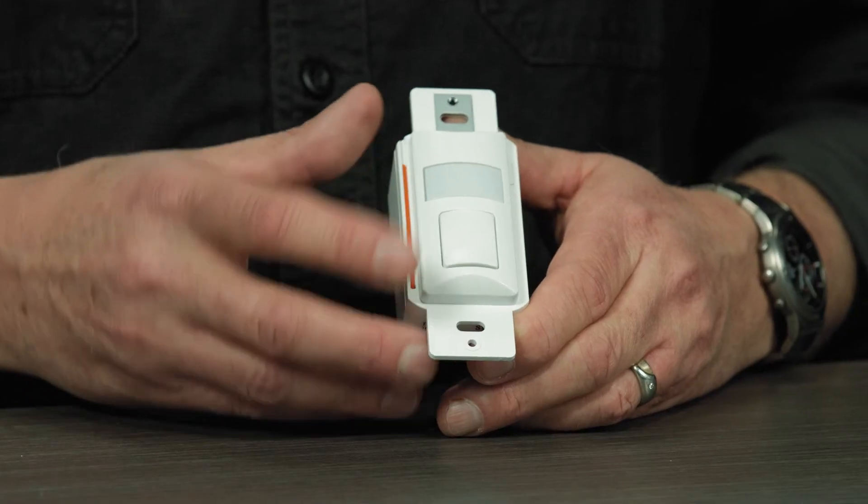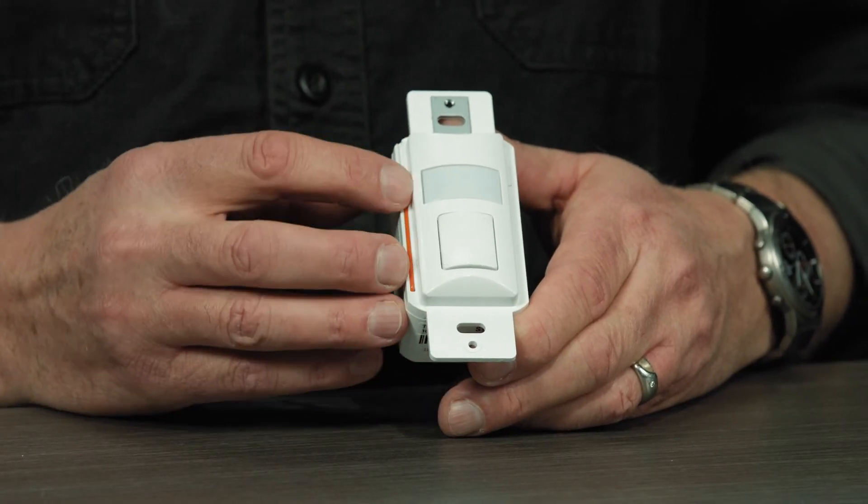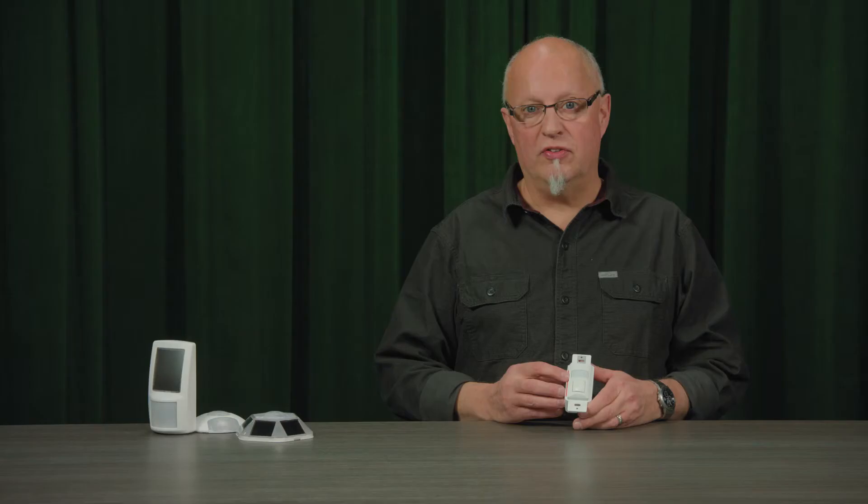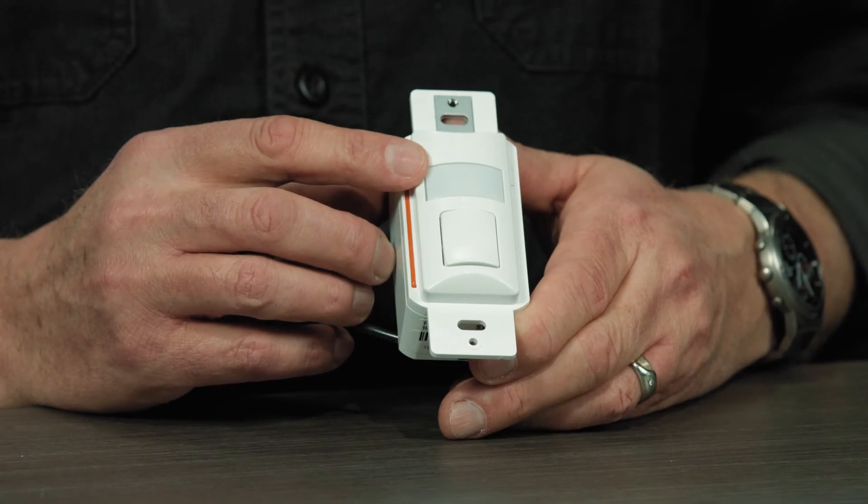This allows us to use this sensor station for Title 24 applications where you have controlled receptacles and you want to control those receptacles with an occupancy application but you're using the sensor for a vacancy application for your lights. This allows you manual on, auto off with the vacancy for your lights and auto on and auto off for your controlled receptacles.